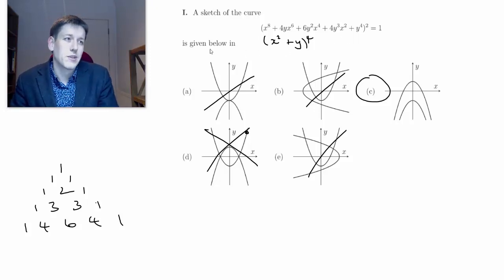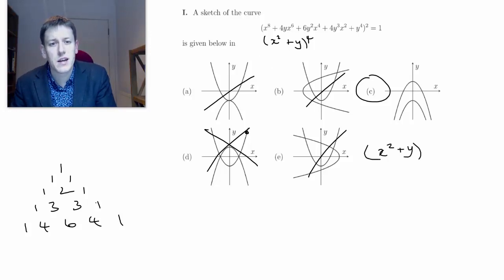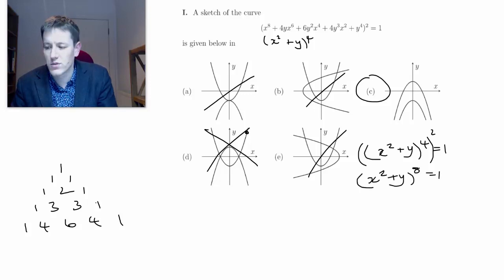So if I've got (X^2 + Y)^4 equals one - sorry so it's all of that to the power of four squared equals one, so I've got ((X^2 + Y)^4)^2 equals one. So (X^2 + Y)^8 equals one. So taking the eighth root of both sides...